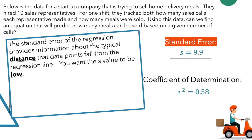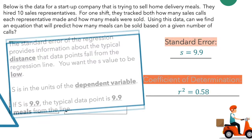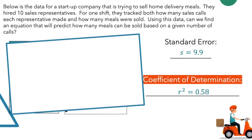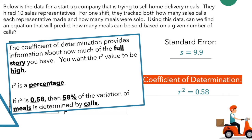The standard error of regression provides information about the typical distance that a data point falls from the regression line. You want the s value to be low. S is in terms of the dependent variable, so if s is 9.9, then in this case the typical data point is 9.9 meals from the line. The coefficient of determination provides information about how much of the full story you have. You want the r squared value to be high. R squared is a percentage, so if r squared is 0.58, then 58% of the variation of meals is determined by calls.